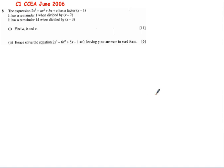Okay, last question in the paper. It's quite a long one. We've got 17 marks for it. You just need to be careful to read it. The expression 2x³ + ax² + bx + c has a factor of x - 1. It has a remainder of 1 when divided by x - 2 and a remainder of 14 when divided by x - 3.